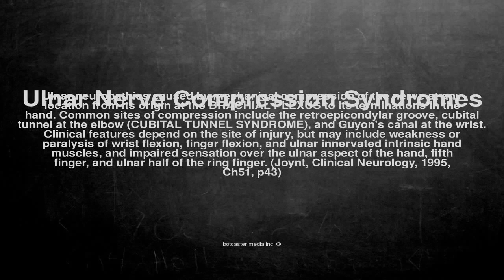Ulnar neuropathies are caused by mechanical compression of the nerve at any location from its origin at the brachial plexus to its terminations in the hand. Common sites of compression include the retroepicondylar groove, cubital tunnel at the elbow — cubital tunnel syndrome — and Guyon's canal at the wrist.